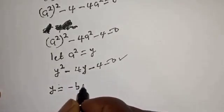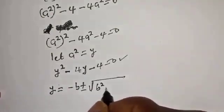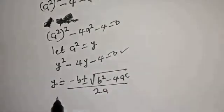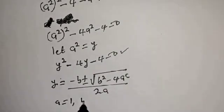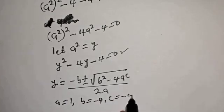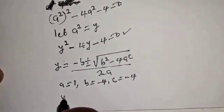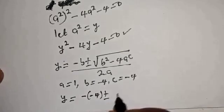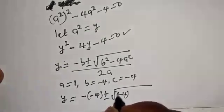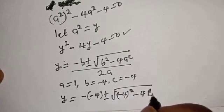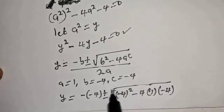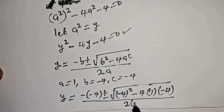The quadratic general formula is y equals minus b plus or minus square root of b squared minus 4ac, all over 2a. From our equation, a equals 1, b equals minus 4, and c equals minus 4. So y equals minus(minus 4) plus or minus square root of (minus 4) squared minus 4 times 1 times minus 4, over 2 times 1.